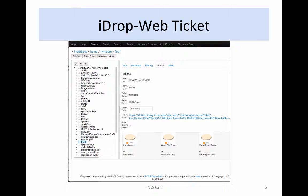The iDropWeb interface for defining a ticket is shown here. This displays the ticket that is created, defines the access permissions, and shows the usage. Multiple tickets can be issued for the same file with different controls. In practice, tickets are an effective way to share data that must have some controls — either URLs are created that can be used by anyone, or tickets are created that limit the access for external users.